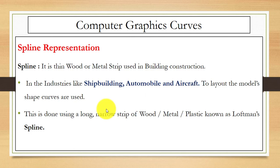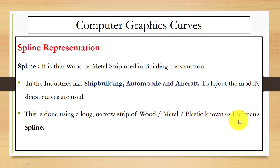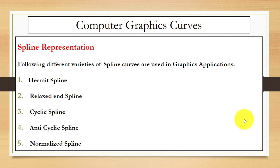Next is spline representation. A spline is a thin wood or metal strip used in building construction. In industries like aircraft, automobile, and shipbuilding, the layout of the model can be shaped using curves, done with a long narrow strip of wood, metal, or plastic known as a loftsman's spline. In computer graphics we use spline curves for the construction of different models.